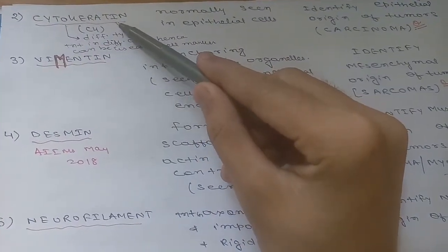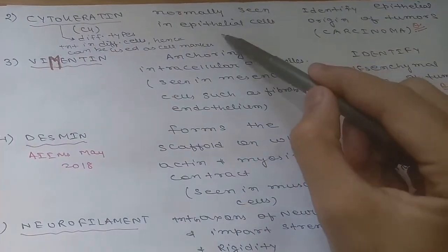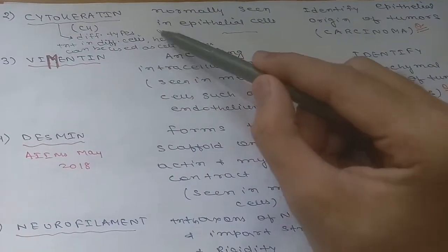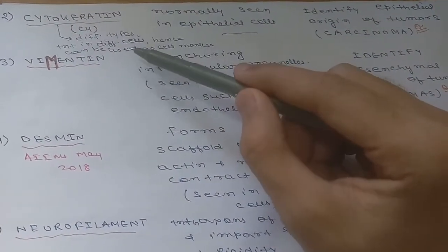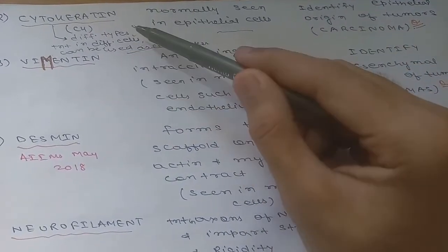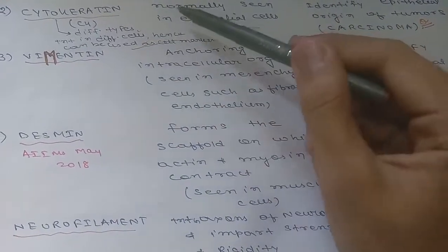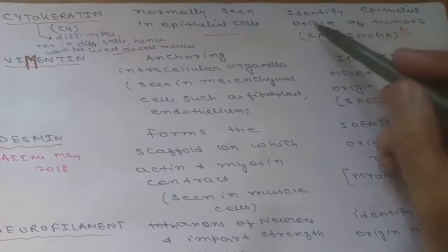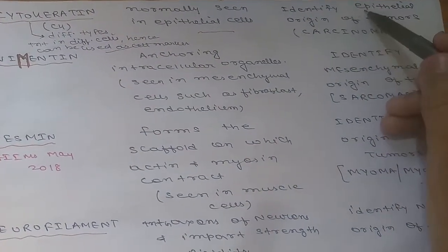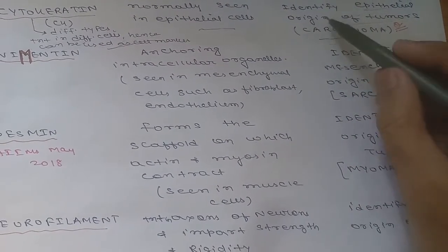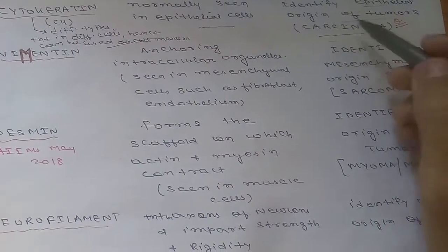The next intermediate filament is cytokeratin, normally seen in epithelial cells. There are many different types of cytokeratin present in different cells, so they can be used as cell markers. In pathology, cytokeratin is used to identify the epithelial origin of tumors, which are known as carcinomas.